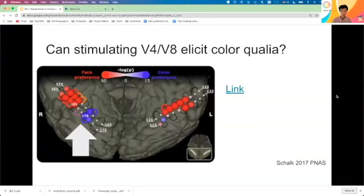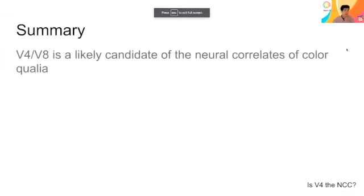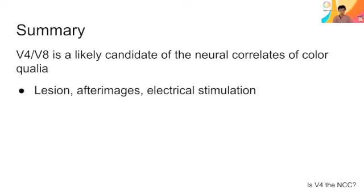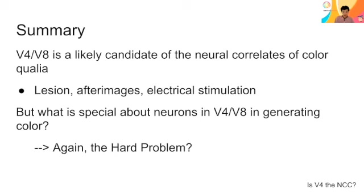So this area that responds strongly to color stimuli also produces colored experience when stimulated. In summary, V4 and V8 are likely candidates for the neural correlates of color qualia, with lesion studies, afterimage fMRI experiments, and electrical stimulation all converging on this conclusion. But what is special about neurons in V4/V8 that generates color qualia? This question encounters something like the hard problem — it is unclear why this has to be the case, and we will look at how to deal with this type of problem further.